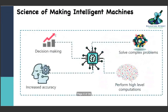Now coming to the science of making machines intelligent - there is a science behind making machines intelligent. How is that possible? A machine can do proper decision making, they can have accuracy, they can solve complex problems, and they perform high-level computations.